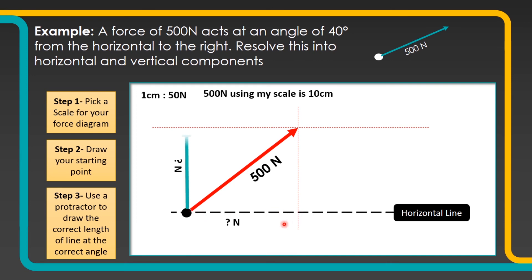The horizontal force and the vertical force go from the dot outwards. We're going to mark those in and then find their size by measuring them with a ruler and using my scale to convert that into a number of newtons.